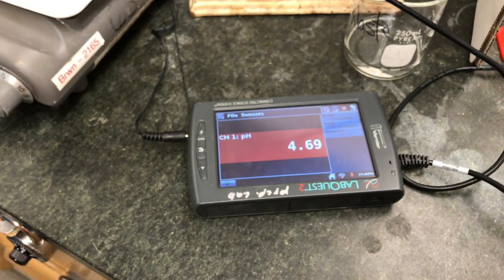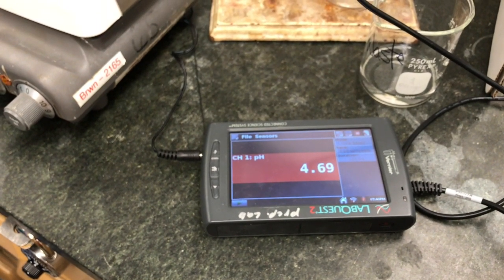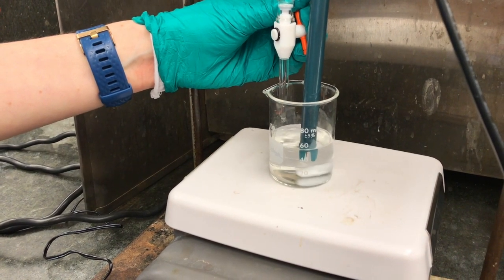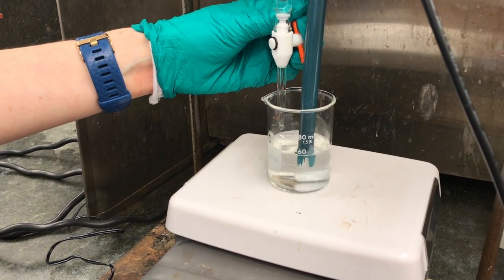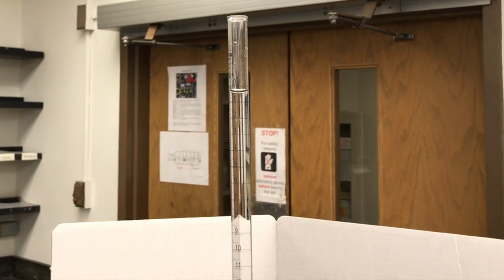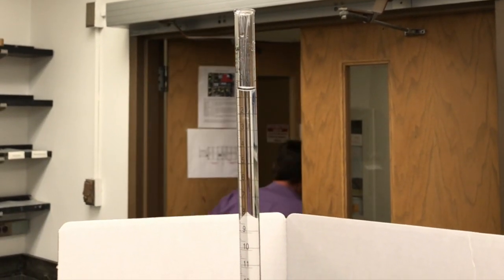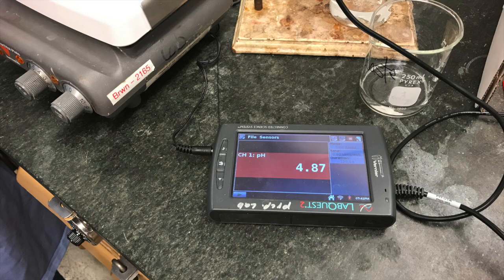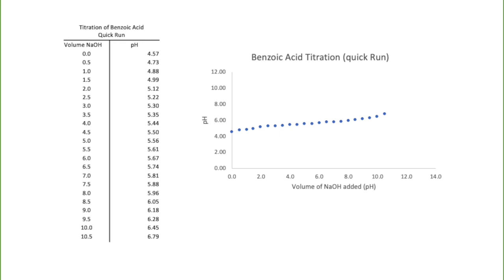Each time you dispense the sodium hydroxide, you just take down the pH reading. We keep repeating this, adding half a mL at a time. For a while there's not really much change in the pH when you're adding half a mL at a time. We're going to skip ahead and show you what it looks like for the first half of this experiment. On this table we've added all the way up to 10.5 mL and the pH has gone up very gradually. Here's what it looks like on a plot.